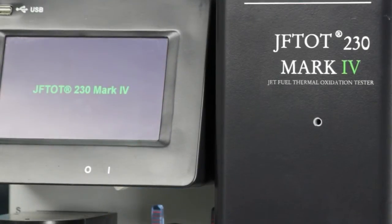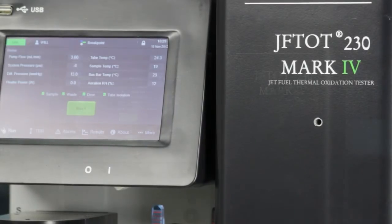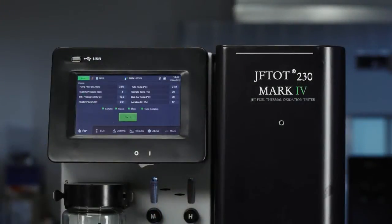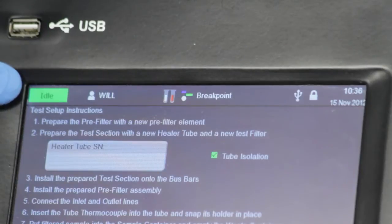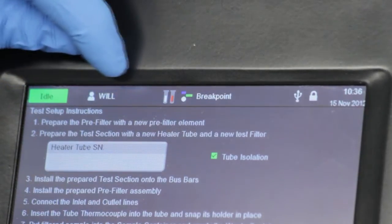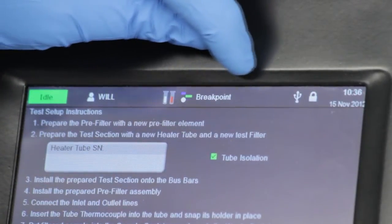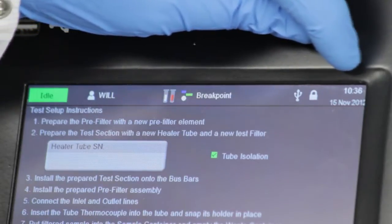After you press the power button, the first screen you'll see is the home screen. If you look at the top of the screen, you'll see the status bar. You'll be able to see the status bar on every page.